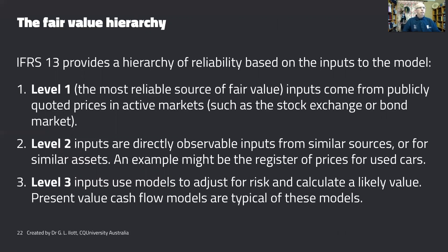Fair value accounting allows three levels, ordered from most preferred to least preferred, with the preference based on objectivity. Level one is the most reliable source of fair value — inputs into your measurement model come directly from publicly quoted prices, such as in the share market. Level two inputs are also quite reliable; they are observable but come from similar assets rather than exact assets.